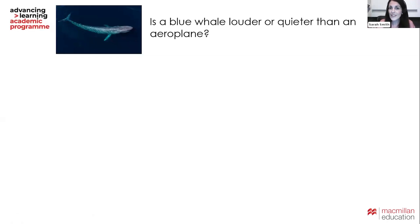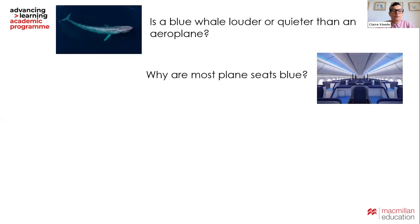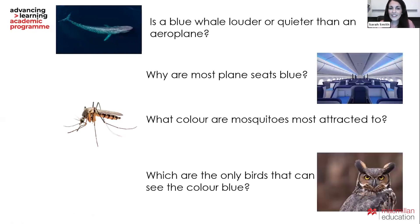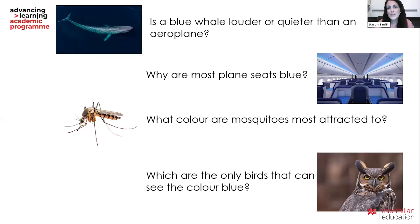You were really close, so well done for that. The first question was: is a blue whale louder or quieter than an aeroplane? The second question: why are most plane seats blue? The third: what color are mosquitoes most attracted to? And finally: which are the only birds that can see the color blue? The answer is an owl — did you know that? I had no idea.